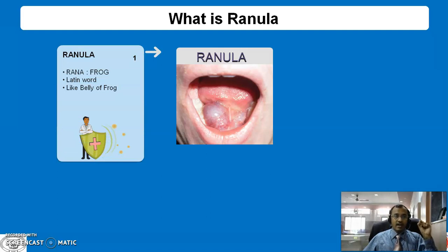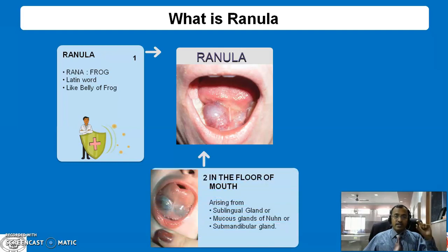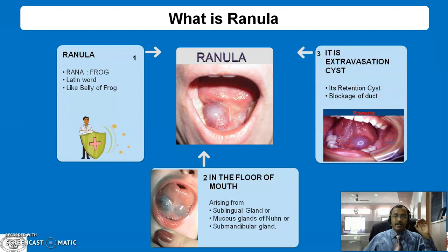The word Ranula derives from the Latin word Rana, meaning the belly of a frog. Usually this swelling is situated in the floor of the mouth and it arises from the sublingual gland or the mucous glands of Wharton or submandibular glands. It is an extravasation cyst, and due to blockage of the duct, it presents as a retention cyst.